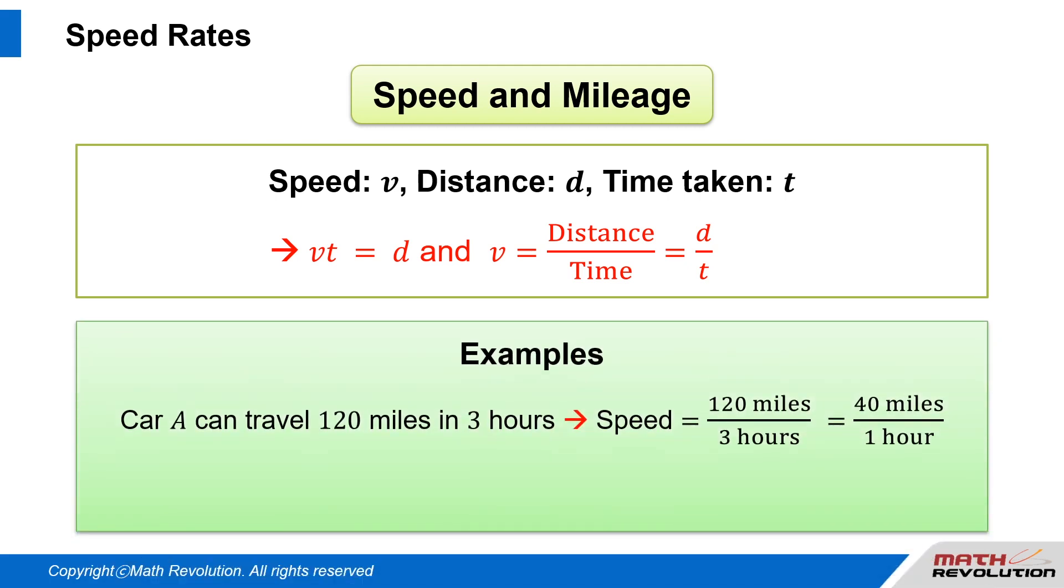For example, if car A can travel a distance of 120 miles in 3 hours, the speed of car A will be 120 miles over 3 hours, which equals 40 miles over 1 hour, which equals 40 miles per hour.